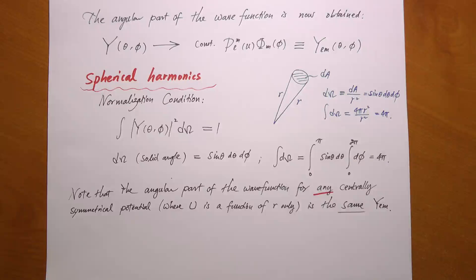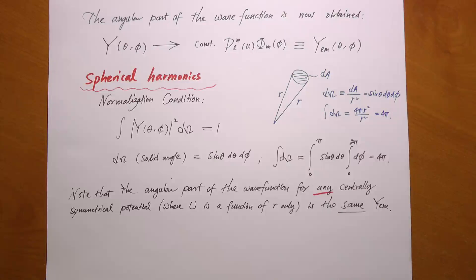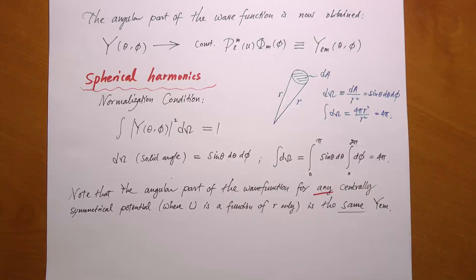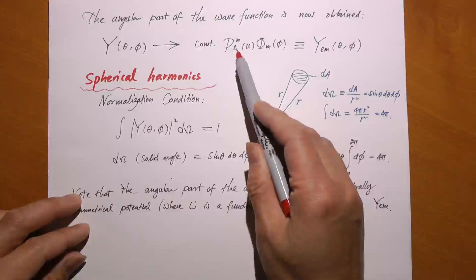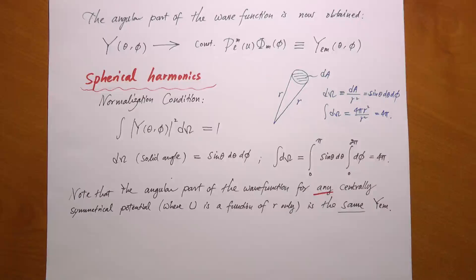For any centrally symmetrical potential, the force points along the line connecting the two particles and therefore provides no torque. So the angular momentum of the particle moving inside a central symmetrical potential is fixed — it's conserved. Looking at the angular part of the wave function, we have a conserved quantity which is angular momentum. So it makes total sense that the two quantum numbers l and m have to do with the angular momentum of the system, because it is indeed conserved.